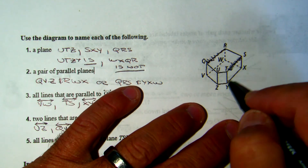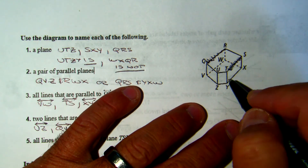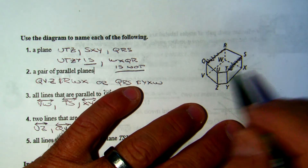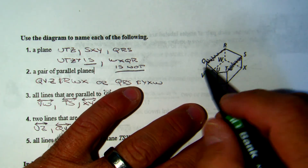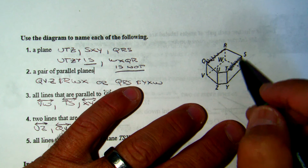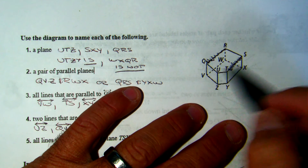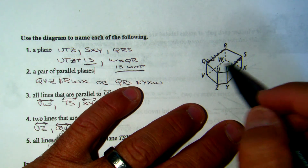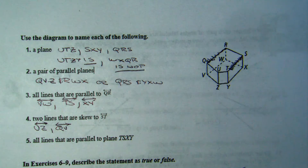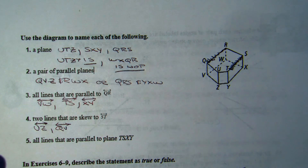SXY — you can connect them if you want, or you can throw in the T. And then QRS, which is the top. Notice there are five different letters, so you can use any of the five.